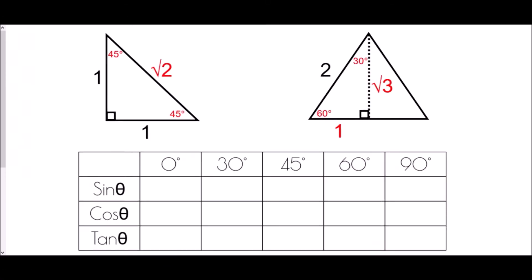I've produced a table involving sine, cosine, and tan for 0°, 30°, 45°, 60°, and 90°. We're going to use the triangles we've just produced to fill in the spaces. As a reminder: sine equals opposite over hypotenuse, cosine equals adjacent over hypotenuse, and tan equals opposite over adjacent — using SOH CAH TOA.